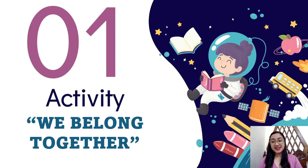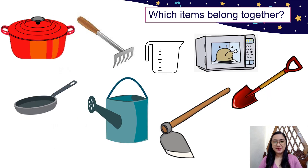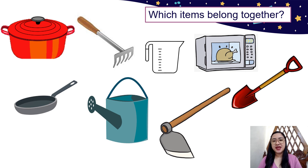Before we begin discussing making connections, let us have our first activity called We Belong Together. Which items belong together? Look at the pictures on the screen. Group the pictures that shall go together, then think of a proper heading for them based on their existing relationships or connections. I will give you a few moments to do the activity.